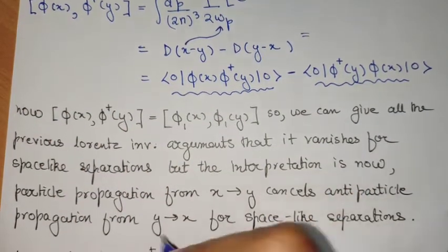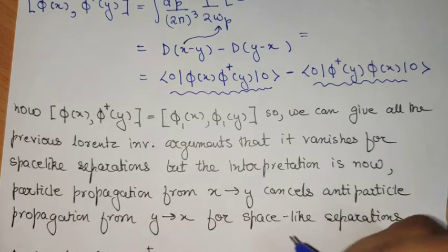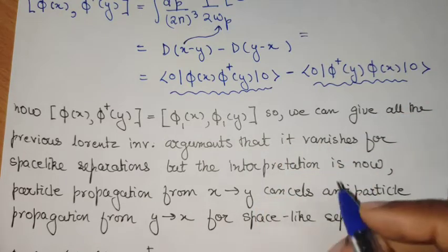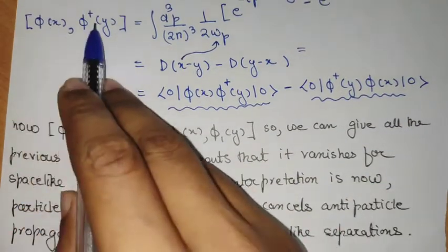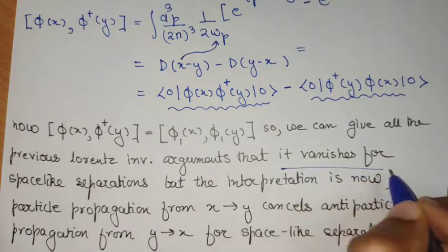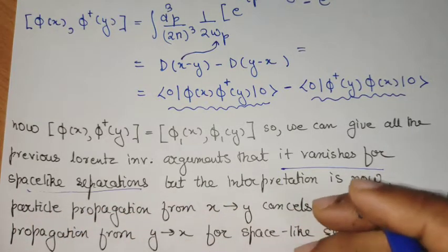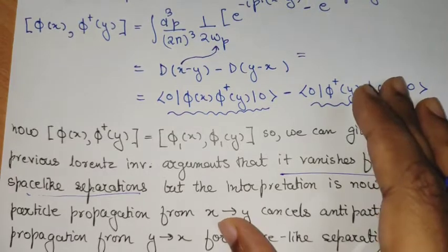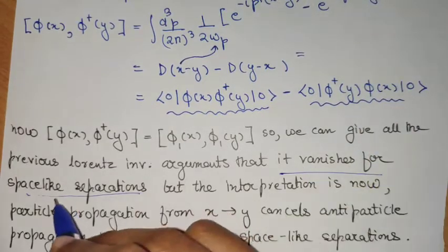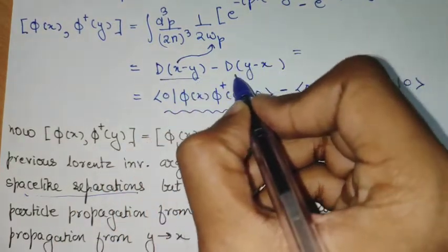So now once we see that the commutator of phi x, phi dagger y is same as the commutator of a real scalar field, we can continue with the Lorentz invariant arguments that we discussed in the real scalar field that this commutator of phi x with phi dagger y, it vanishes for all the space-like separations.